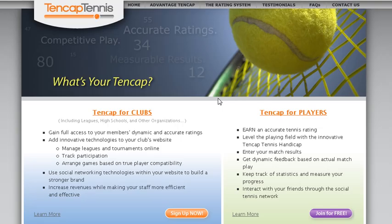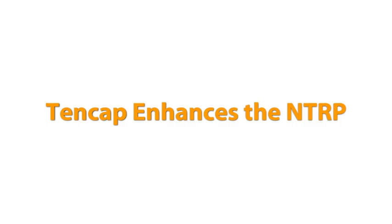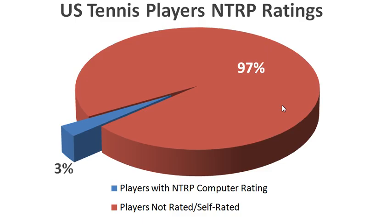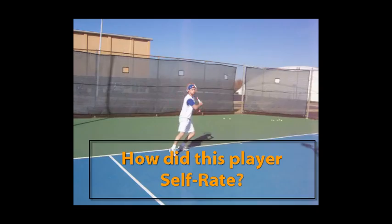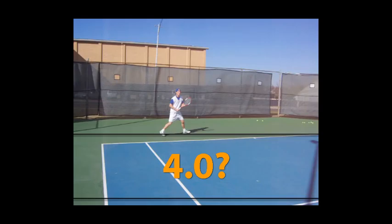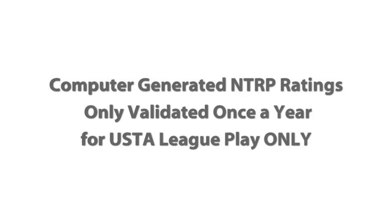The 10captennis rating system enhances the NTRP rating system, making the NTRP more dynamic and more accurate. According to the Tennis Industry Association, less than 3% of tennis players in the US have a computer-generated NTRP rating. That means 97% of the tennis market is at best self-rated using the NTRP, and we all know how accurate self-rating can be. Plus, the computer-generated ratings are only validated one time per year — not exactly dynamic.